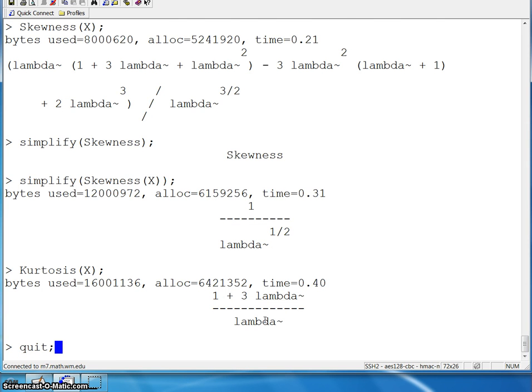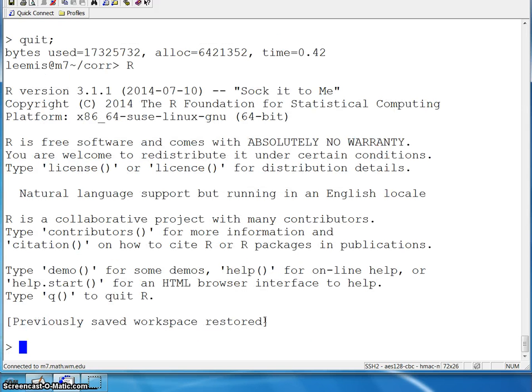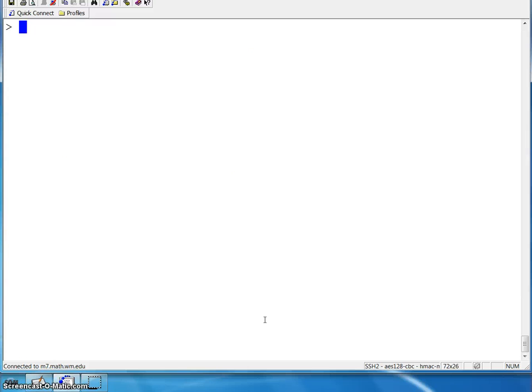I am going to quit out of Maple at this point and jump into R. Don't forget that control L will clear the screen in R. There are four different functions. I'll do the first one, d plus. If you put in an x value, let's say 3, and a lambda value of 10, this will give you the value of the probability mass function of a Poisson 10 random variable evaluated at 3.